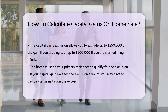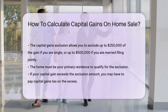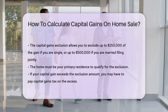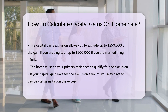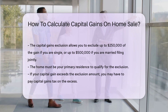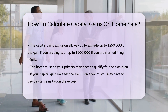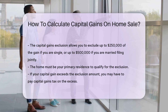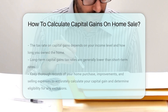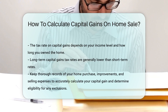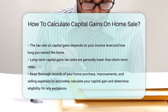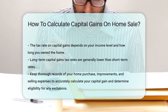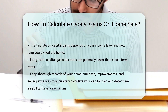To qualify, the home must be your primary residence. If your capital gain exceeds the exclusion amount, you may have to pay capital gains tax on the excess. The tax rate depends on your income level and how long you owned the home. Long-term capital gains tax rates are generally lower than short-term rates.